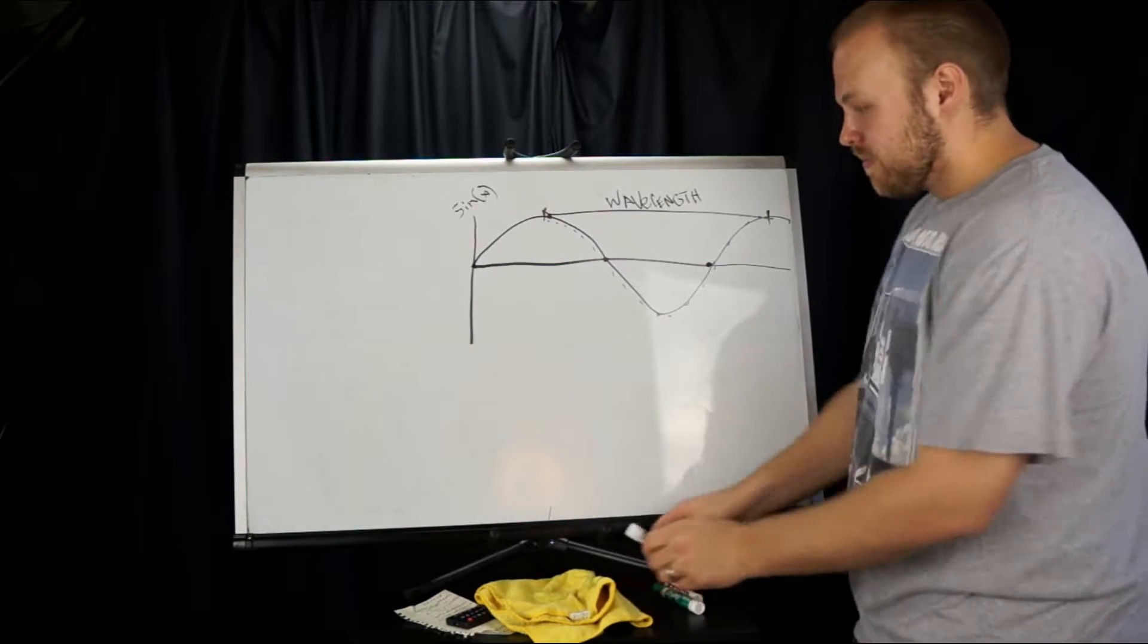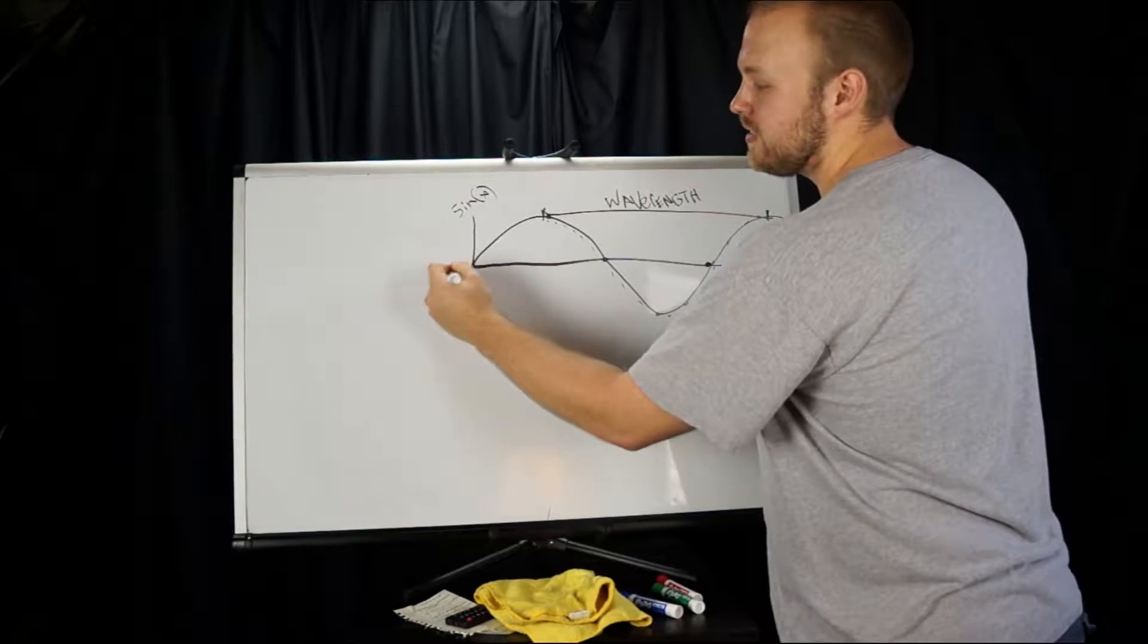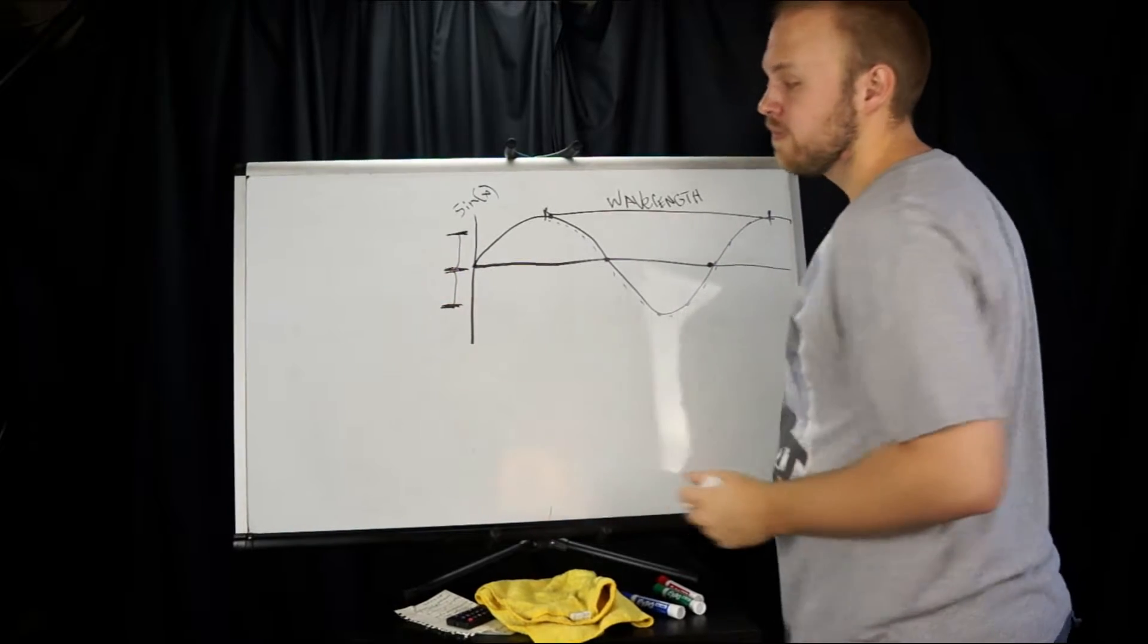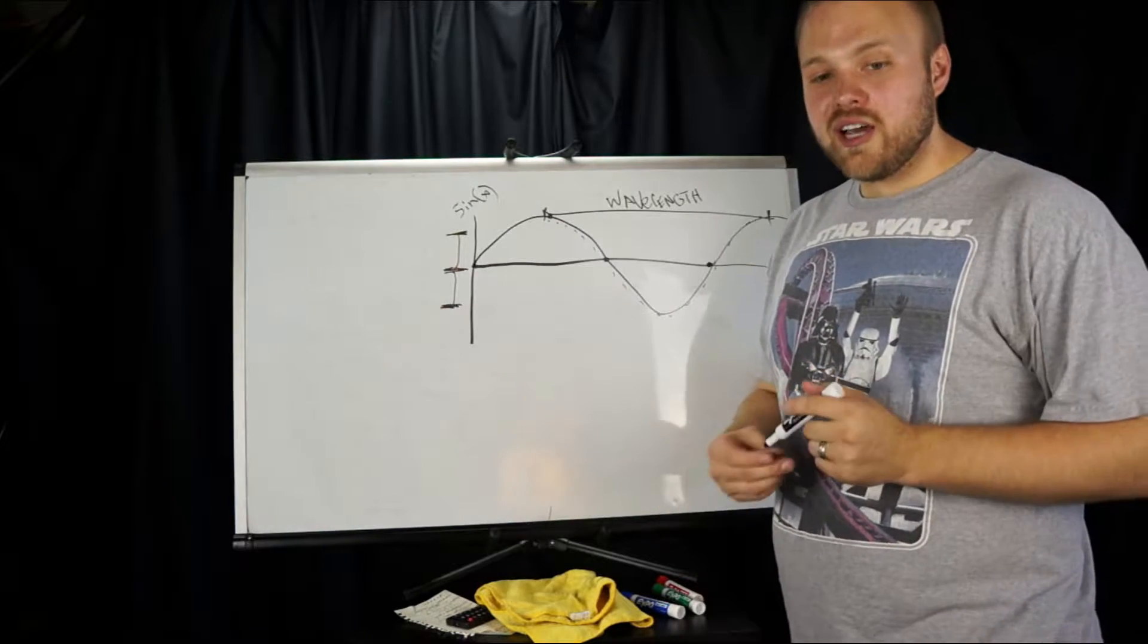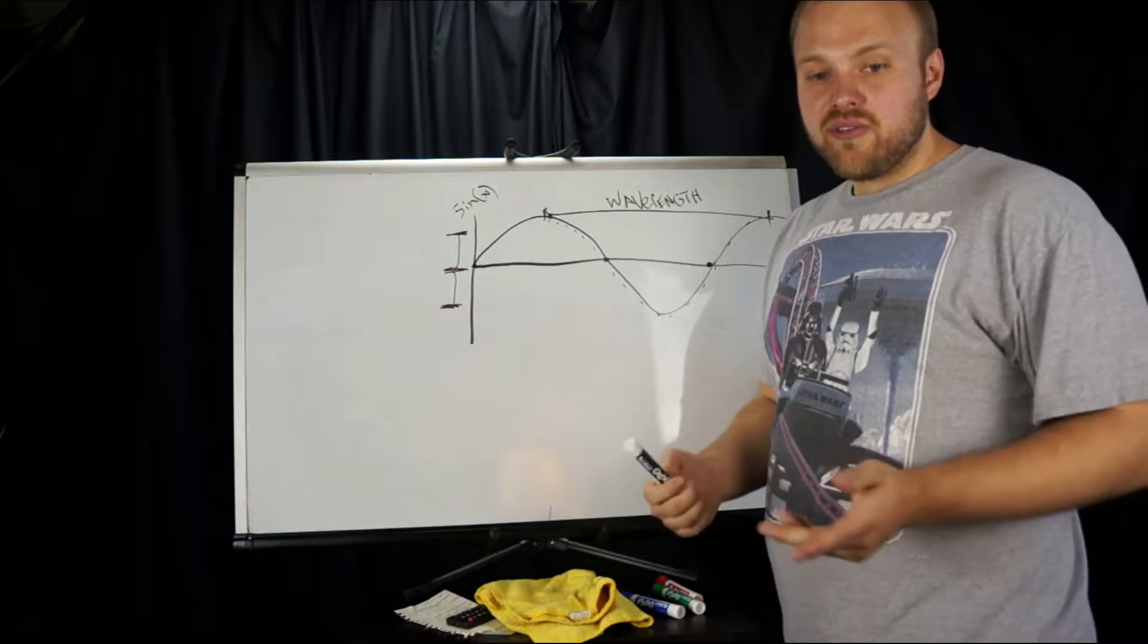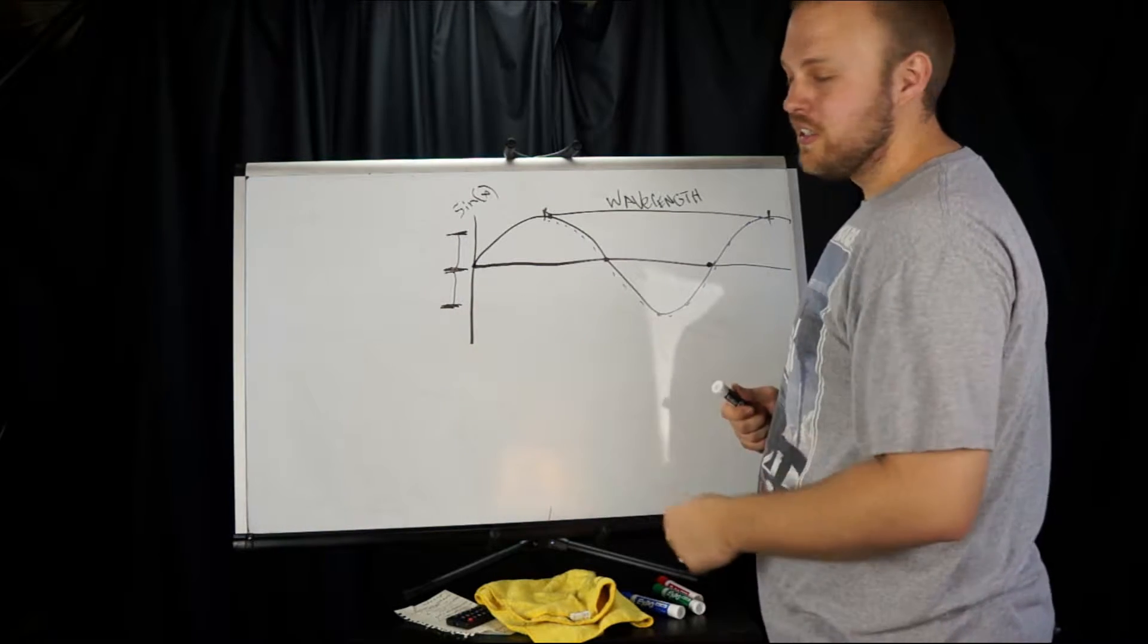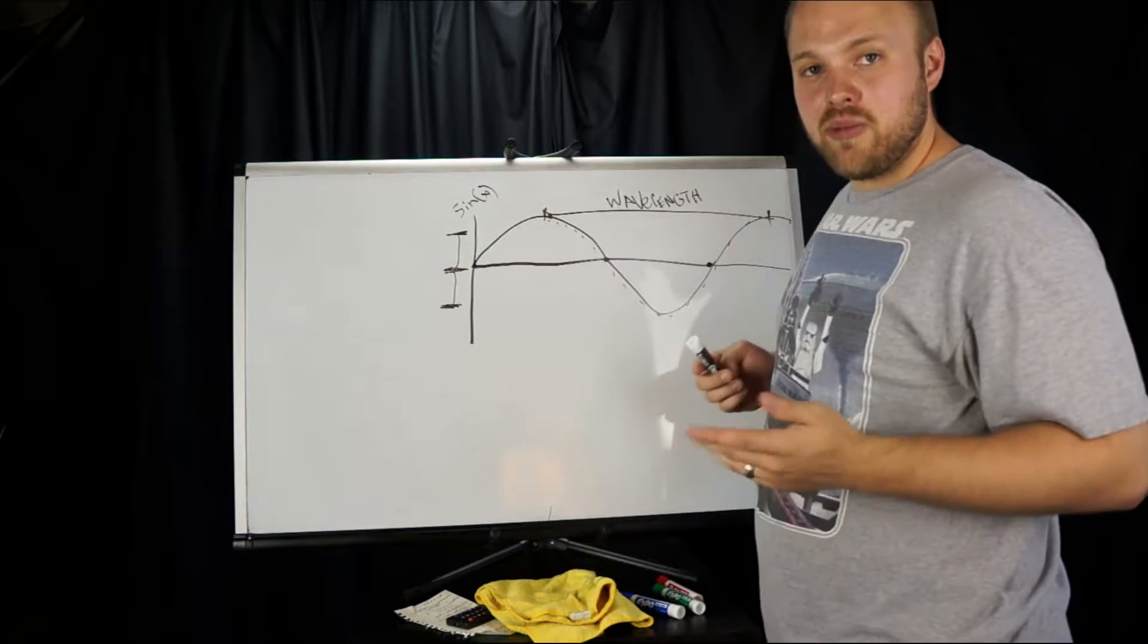All right, moving on. The distance from this zero point up to the top or down to the bottom is called amplitude. And that's essentially how loud your sound is. So we've got amplitude is how loud your sound is. And then frequency based off of this wavelength, which gives you pitch or tone.